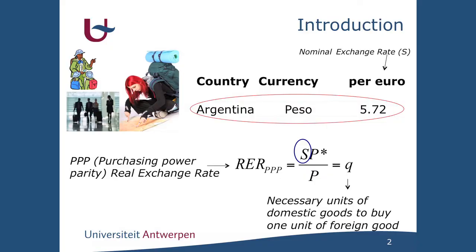When the PVP real exchange rate increases, our competitiveness increases because foreign goods become expensive in terms of our goods, or domestic goods become cheaper in terms of foreign goods. The PVP real exchange rate, however, does not tell us much about the allocation of resources within our economy — which goods we will end up producing.